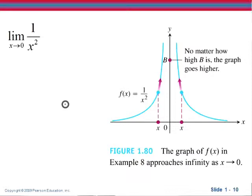Here is another graph we can look at: the graph of y equals 1 over x squared. As we approach 0 either from the left or from the right, you'll notice that the y values approach positive infinity. That means the limit as x approaches 0 of 1 over x squared is positive infinity. Again, this doesn't mean that infinity is a number — it just tells us that as x approaches 0, our y values become infinitely large.